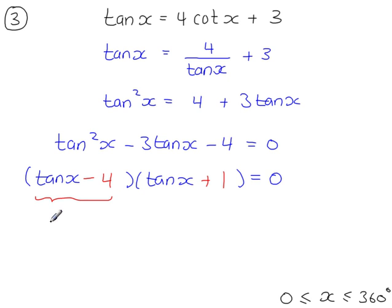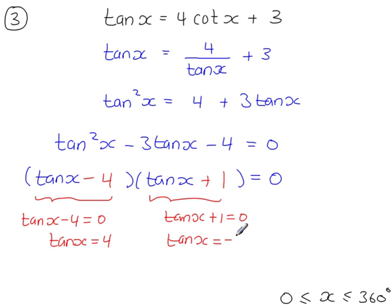So from here, we've got tan x minus 4 equals 0. So tan x is equal to 4. And from here, we have tan x plus 1 equals 0. So tan x is equal to minus 1.